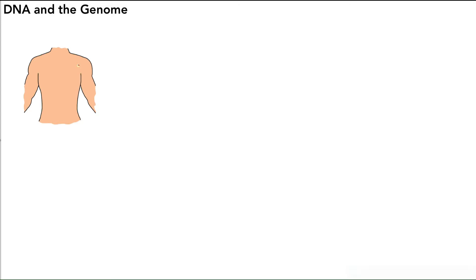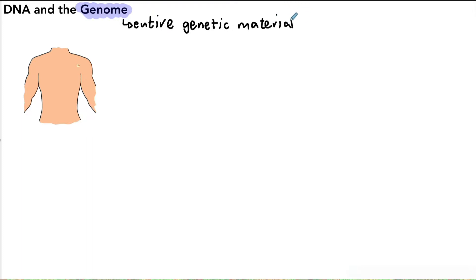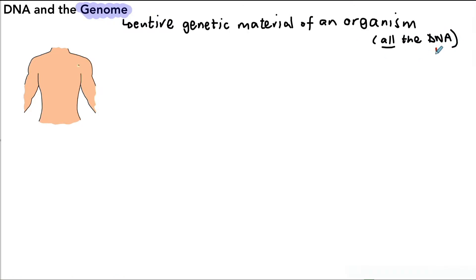In this video we're going to look at DNA and the genome. The genome is basically the entire genetic material of an organism — it could be a plant, an animal, or even bacteria. The entire genetic material of that organism is called its genome, which is basically all of the DNA present in that living thing. DNA has a very important job: it controls the production of protein — that's all it does in the cell.